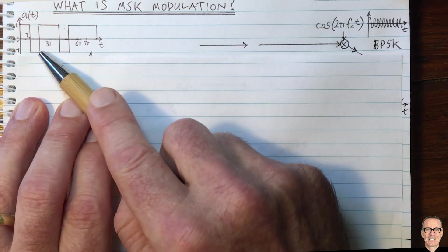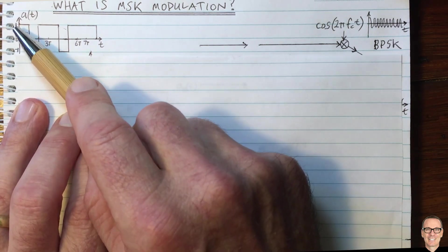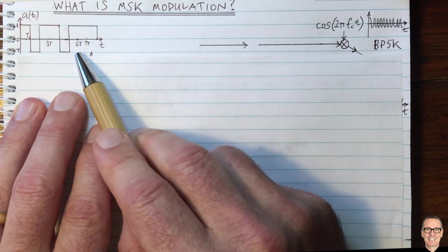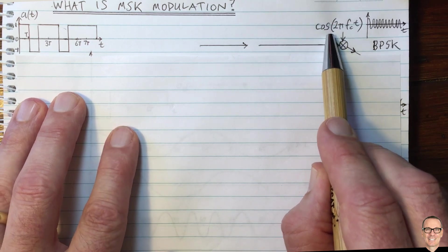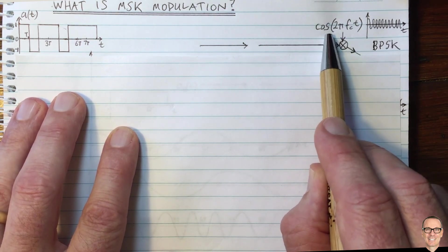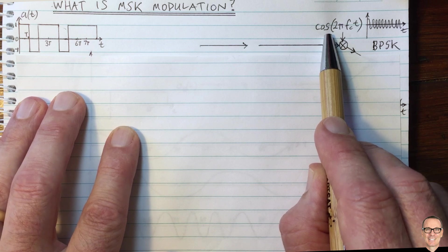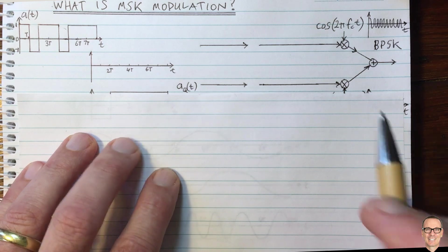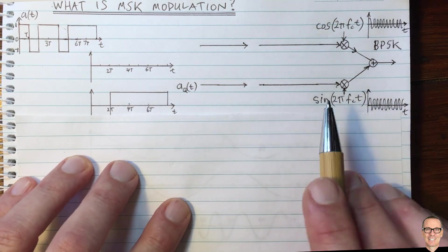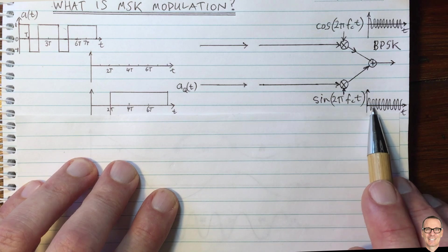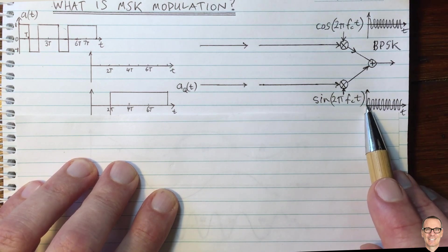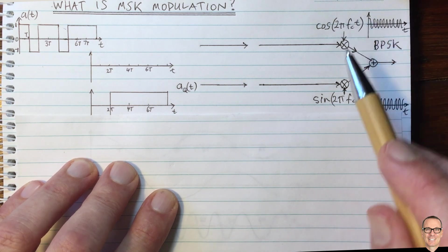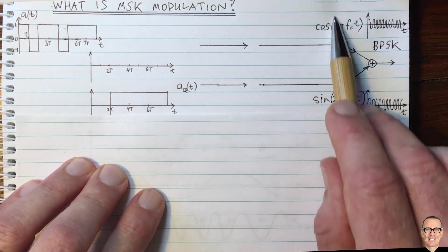A problem with this is that if we want to send data at a high rate, then we're switching this phase very quickly. Something we can do is recognize that there's another waveform at the carrier frequency which is orthogonal to the cosine. We do this in what's called 4PSK, using a quadrature waveform — a cosine carrier and a sine carrier at the same frequency.